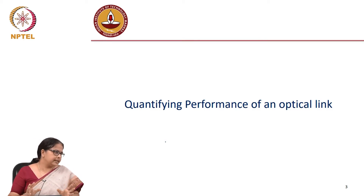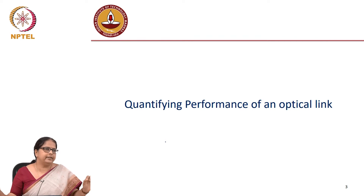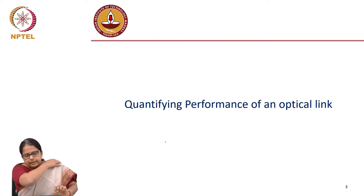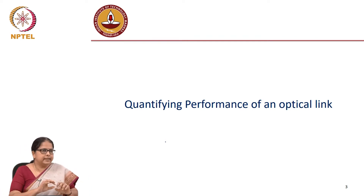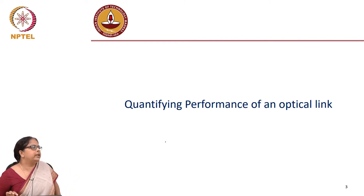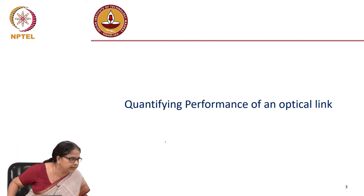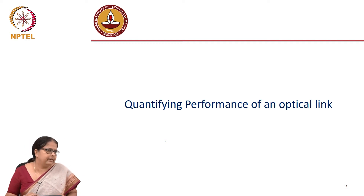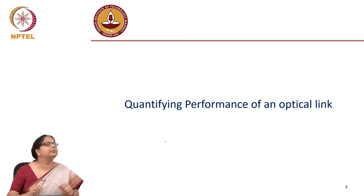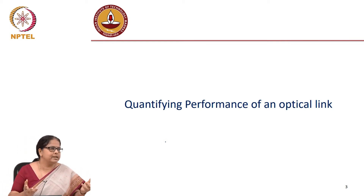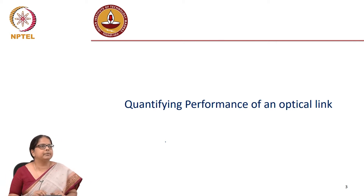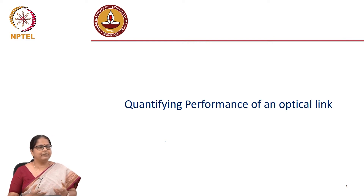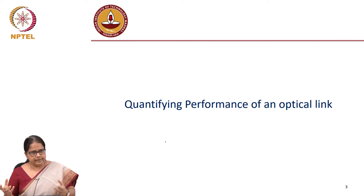We move on to link design now. We will come back to the coherent link separately, but we want to design a simple point-to-point link. We are slowly getting into the networks topic. Before we design the link, what we want to know is what is the desirable performance of the link? How do you want the link to perform? There must be something that quantifies the performance of the link. So first we will define what is the metric of performance.